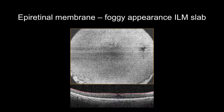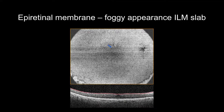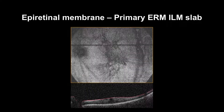In some cases, the EnFace will appear foggy due to focus on the posterior hyaloid or deeper tissue. Please note how the fovea is intact. In some cases, the fovea will appear intact, distorted, or absent.